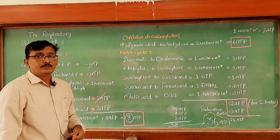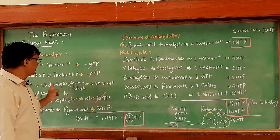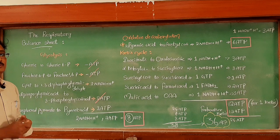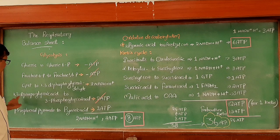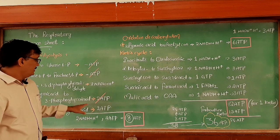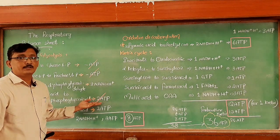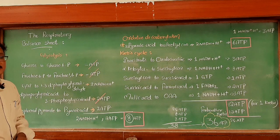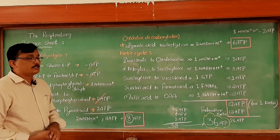When glyceraldehyde 3-phosphate converts into 1,3-diphosphoglyceraldehyde, NADH+H+ is forming. Because both GAP and DHAP (which converts into GAP) undergo the same reactions, 2 NADH+H+ are produced. Then in the reaction of 1,3-diphosphoglyceric acid to 3-phosphoglyceric acid — substrate level phosphorylation — 2 ATPs are forming. And then phosphoenolpyruvate to pyruvic acid, the last step of glycolysis, another substrate level phosphorylation producing 2 more ATP molecules.